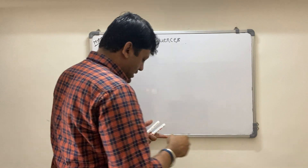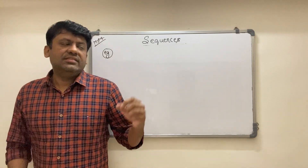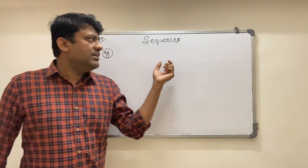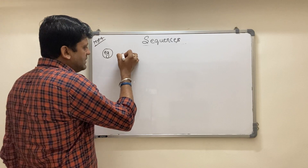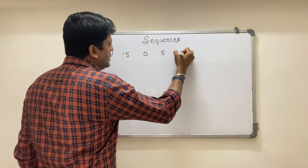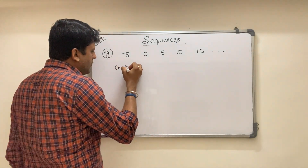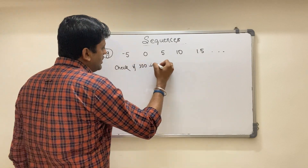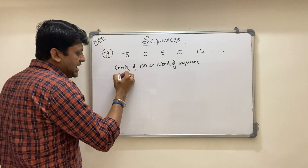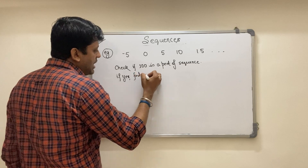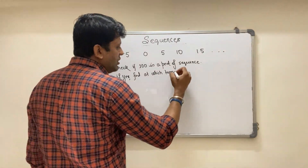Now let's look at another type of question. They give you the progression — for example, minus 5, 0, 5, 10, 15, and so on — and ask you: check if 100 is a part of the sequence. If yes, find at which term it is placed. So they are asking you to find the value of n.